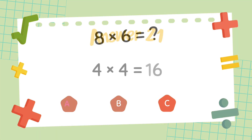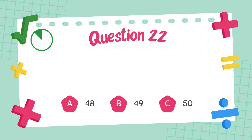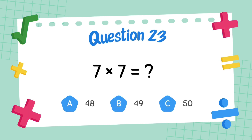What is 8 multiply 6? The answer is 48. What is 7 multiply 7?